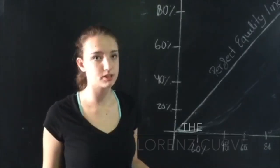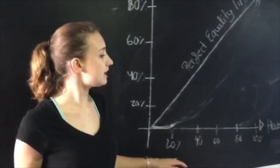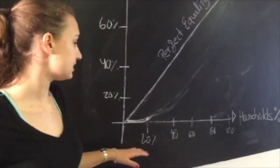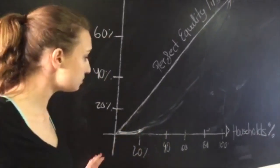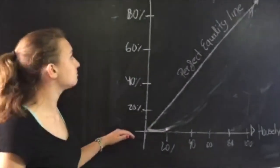The Lorenz curve is an economic tool that measures income distribution. On the X axis, we have the percentage of households ordered from poorest to richest. On the Y axis, we have the income percentage.